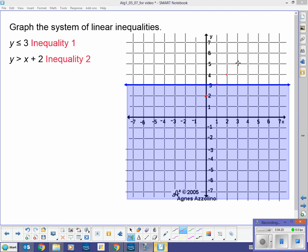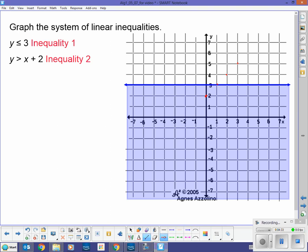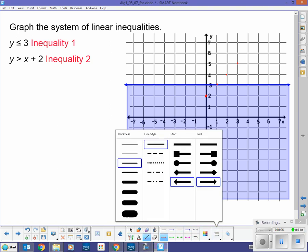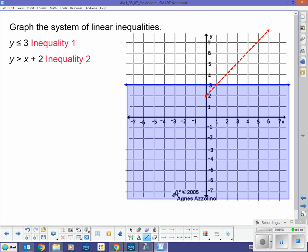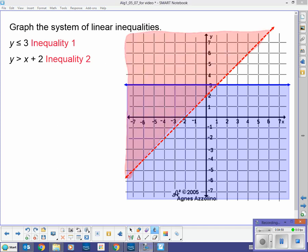And the slope is 1. So, it's going to be going up by 1 this way. Okay, so that boundary is going to look like this. Okay, but now we have to do the shading part of it.